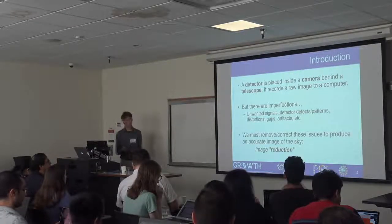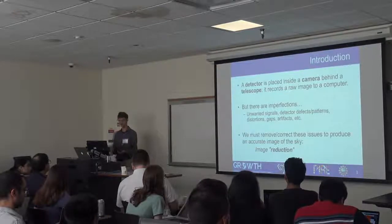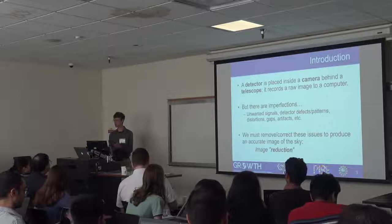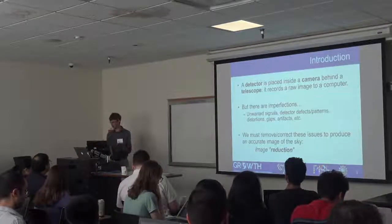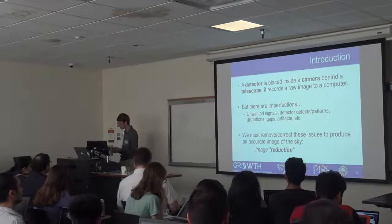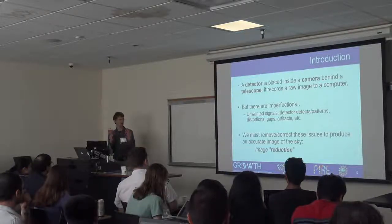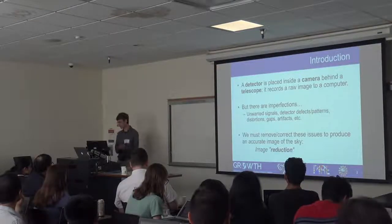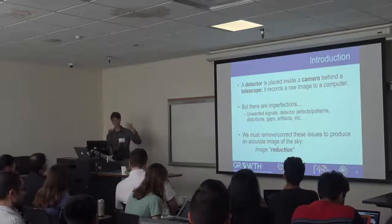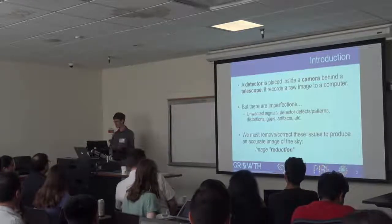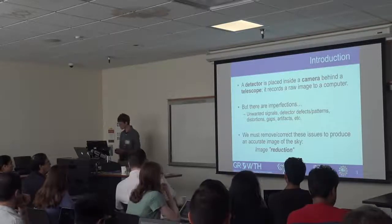In the optical, the way that we take images is we use telescopes with mirrors and lenses, and cameras with detectors and shutters. So we take our detector, which I'll talk about how these work in a moment. We place it inside a camera which keeps it cold, keeps light out when we don't want it and lets it in when we want it. It observes a field for a certain period of time and records the image that is incident upon it to a computer where we can analyze it later.